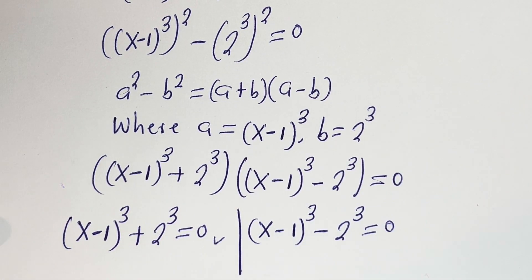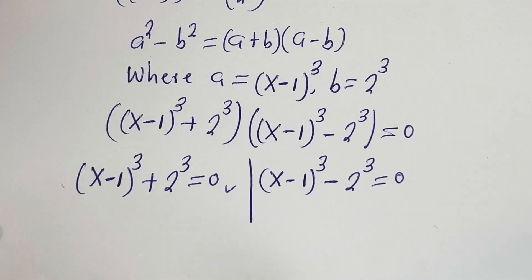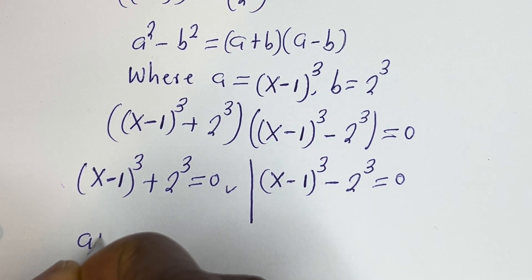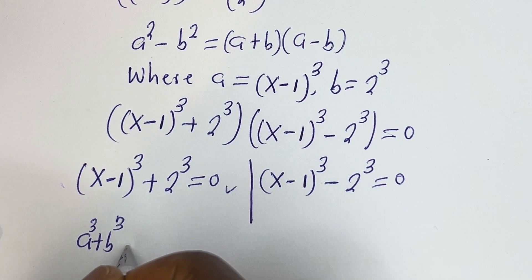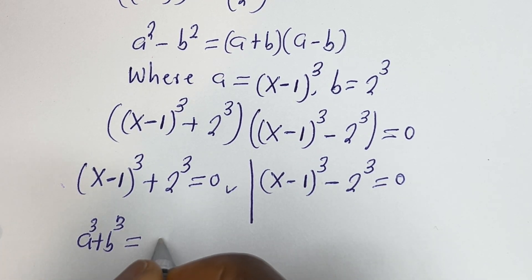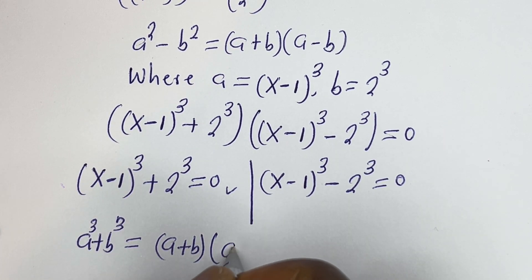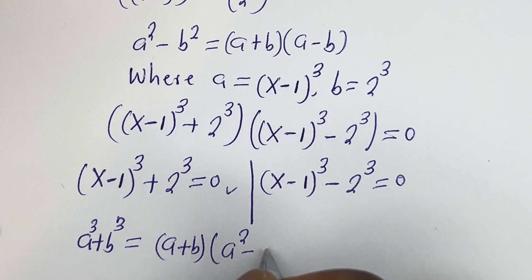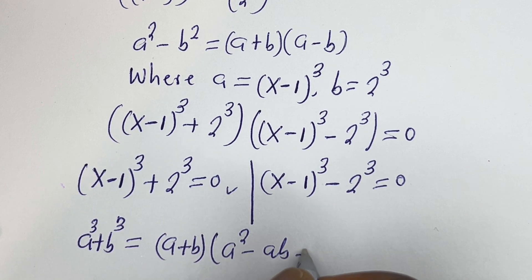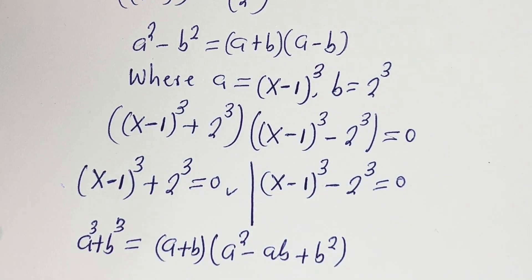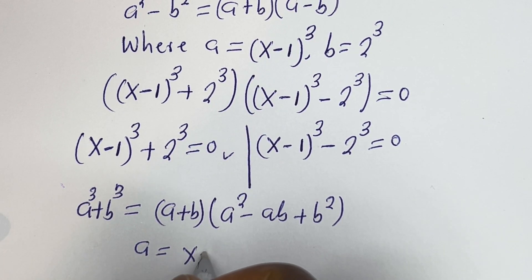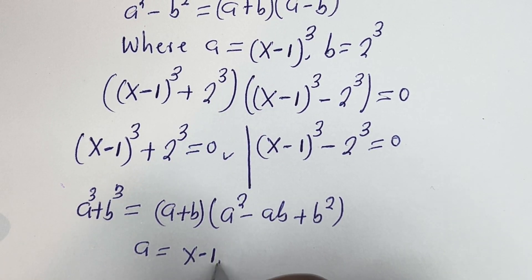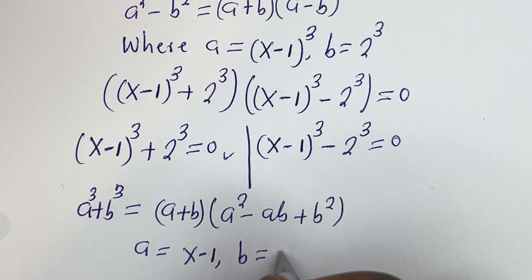Now let's consider the first case. Take note that a cubed plus b cubed is equal to (a plus b)(a squared minus ab plus b squared). In this case, a is equal to x minus 1 and b is equal to 2.